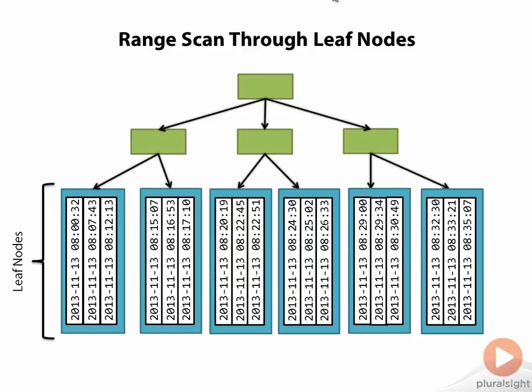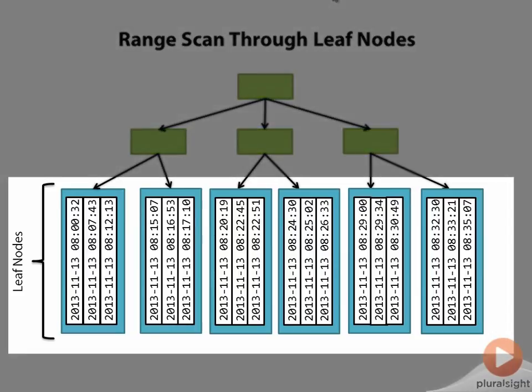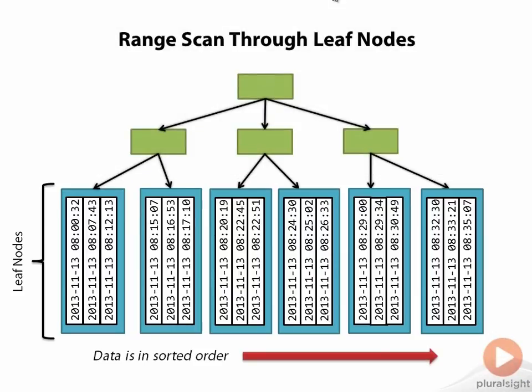The data in the leaf nodes of the index, which are these nodes at the bottom of the index, is stored in sorted order. So once Oracle is at the leaf block level, it can traverse the index horizontally to scan for any data that it needs.